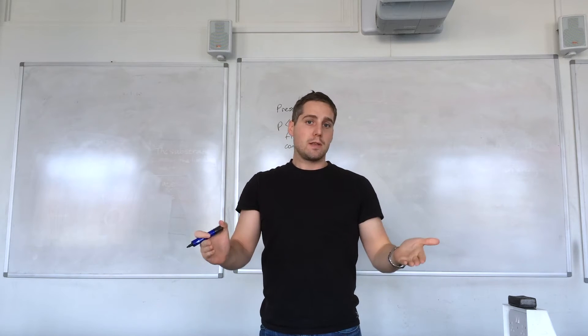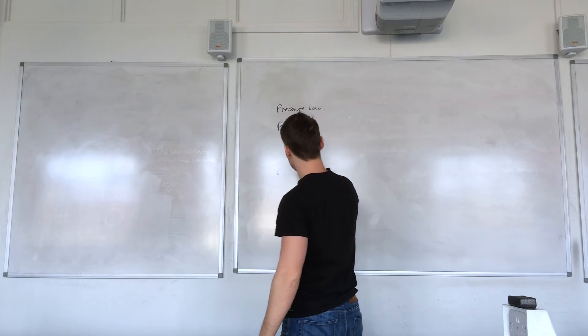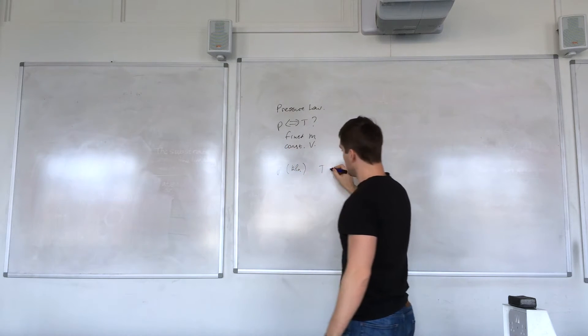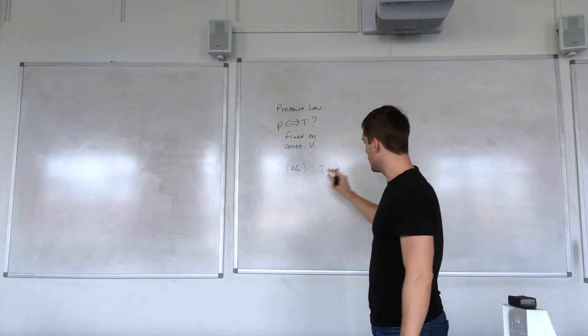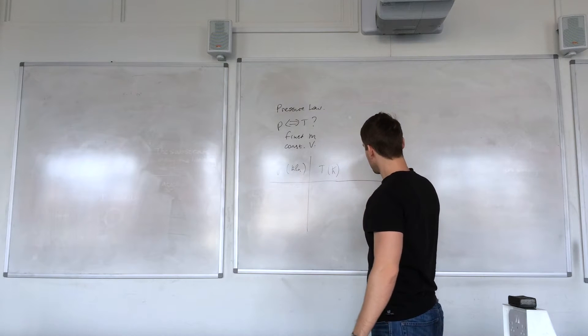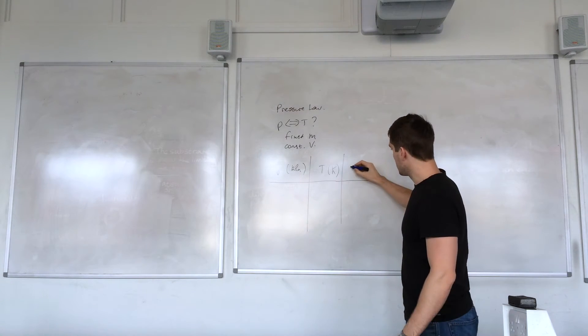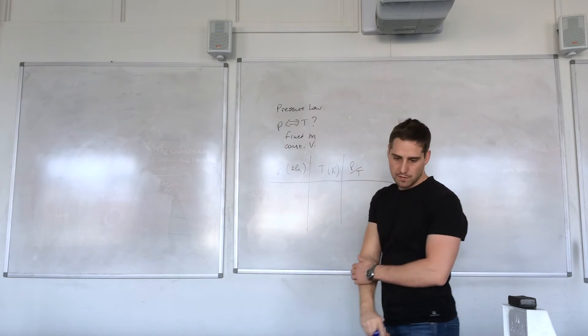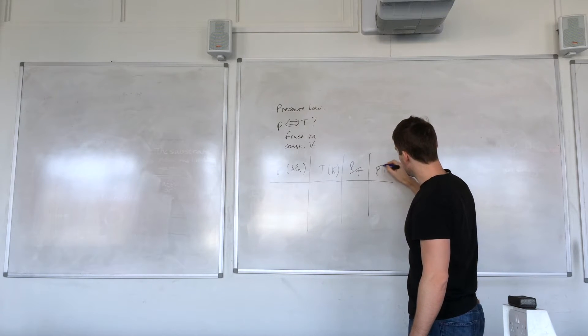We'll start off by looking at our test data and producing a table. Pressure there, temperature. Temperature is in absolute, on the absolute scale so it's Kelvins. And over here we're going to test for whether it's directly proportional by doing pressure over temperature, and next to it we'll do pressure times the temperature.